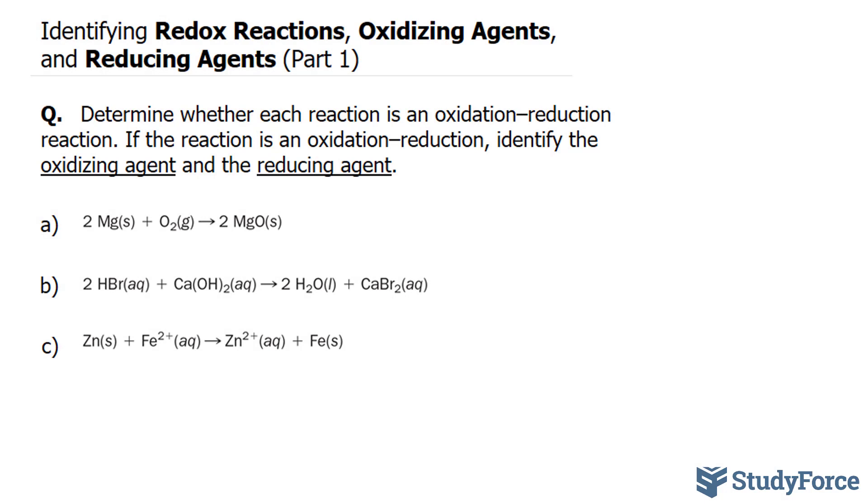Let's start with question A. We have 2 Mg(s) + O₂(g) → 2 MgO(s). Let's start by writing out the oxidation states of each of these compounds.